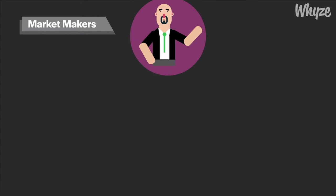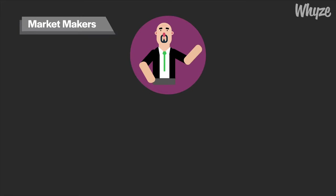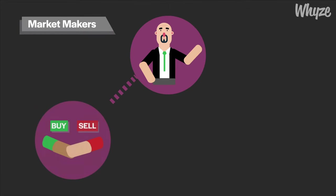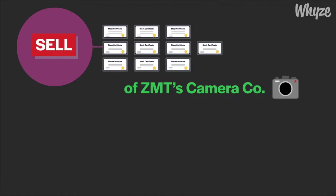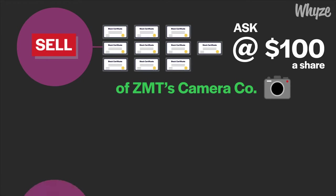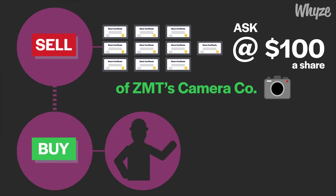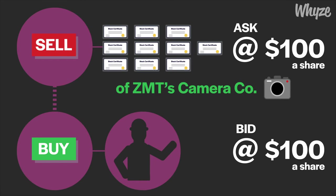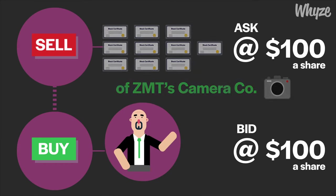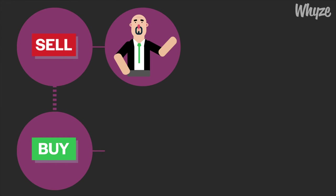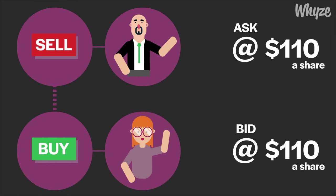Bid-ask spreads are maintained and influenced by market makers to keep markets running efficiently. Market makers are firms or individuals who buy and sell stocks to create a market, maintain liquidity, and hopefully return a hefty profit for themselves. For example, if you wanted to sell 10 shares of ZMT's camera company at $100 a share, there would have to be someone wanting to buy 10 shares around the same time at the exact same price. Frequently, this exact match is not met, and a market maker would buy your 10 shares at the ask price of $100 a share. The market maker would then try to sell the 10 shares to another investor at a bid price above $100 and pocket the difference. This provides the market maker with a profit while also giving you a better opportunity to buy and sell stocks immediately at your desired price, regardless of whether there is another investor matching your order.